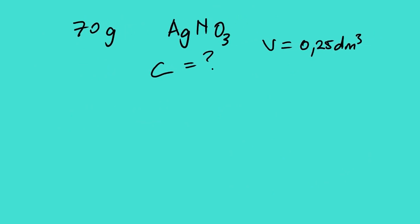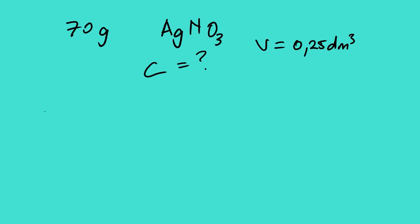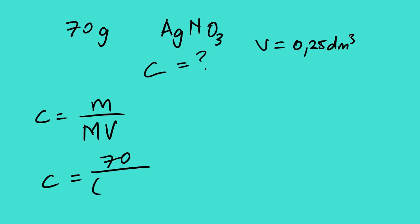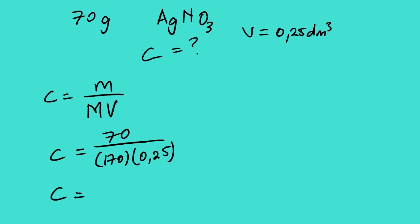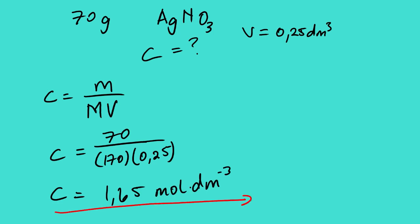When you look at another example, feel free to pause the video and work out this question. We can use this equation again: C = mass over molar mass times volume = 70 over 170, divided by 0.25. Our concentration equals 1.65 mol per dm³. It is very important that you look at lesson video number one of the stoichiometric series in order to understand how we calculate the molar mass.